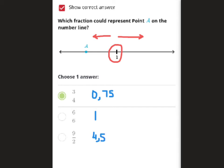So this question is asking which fraction could represent point A on the number line. And the answer is a number that is less than 1, which is in fact 0.75, and therefore the answer is 3 over 4.